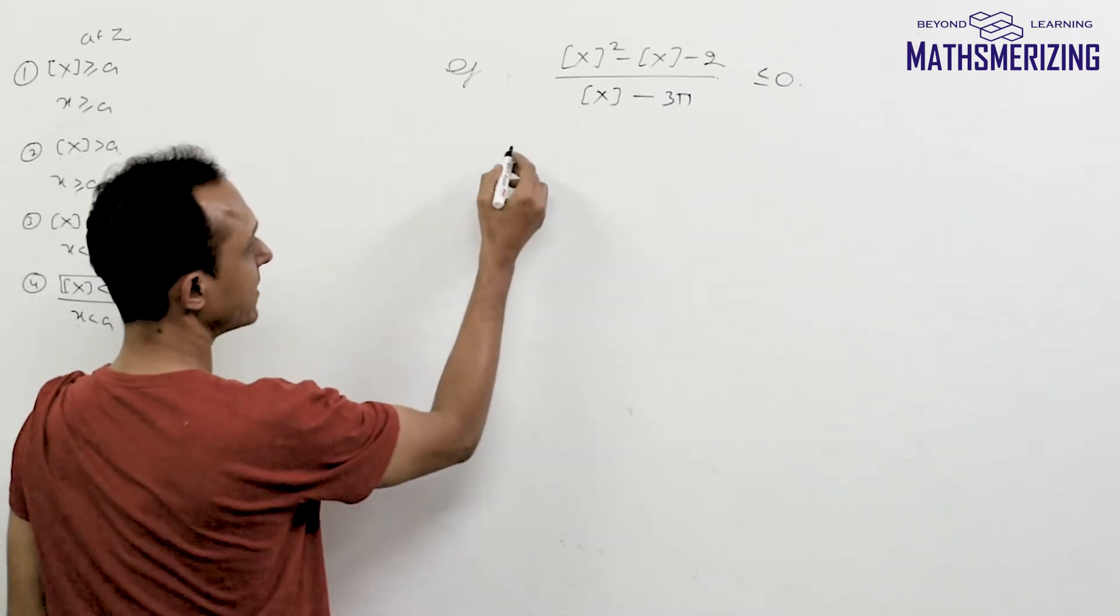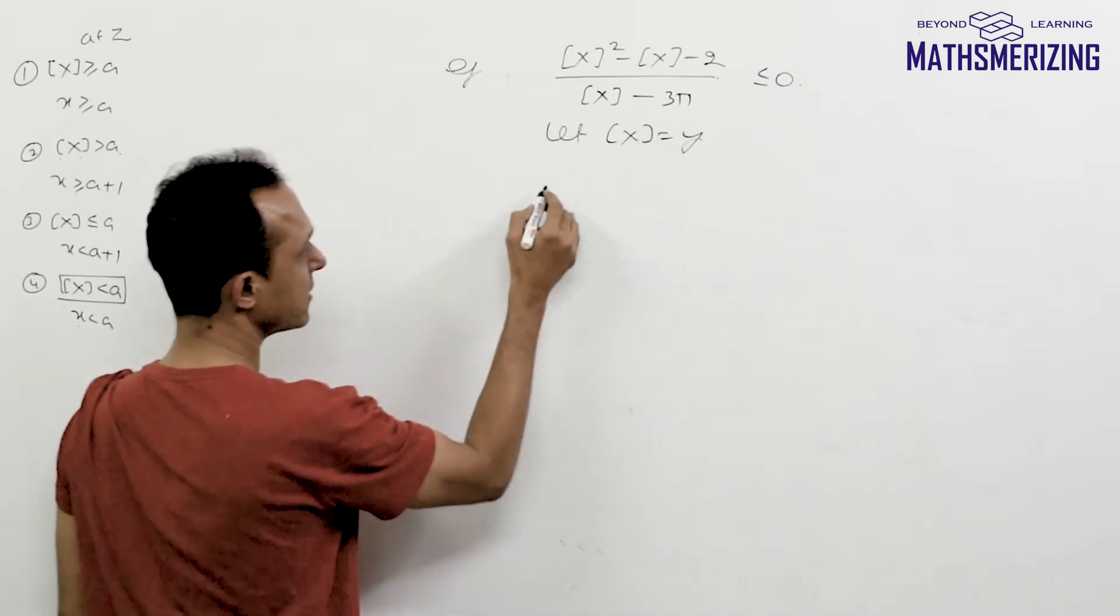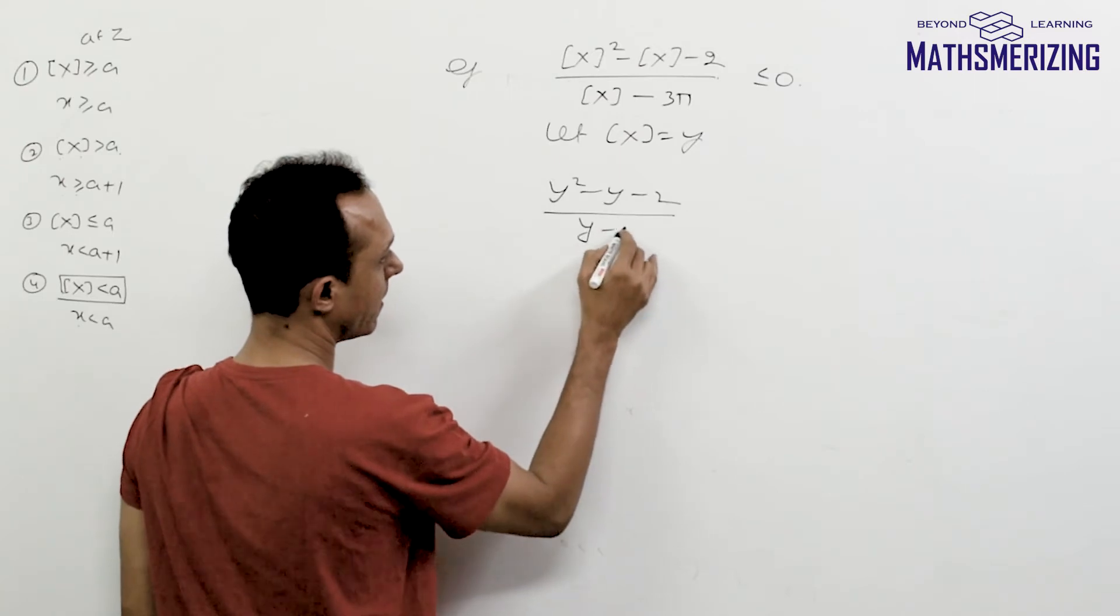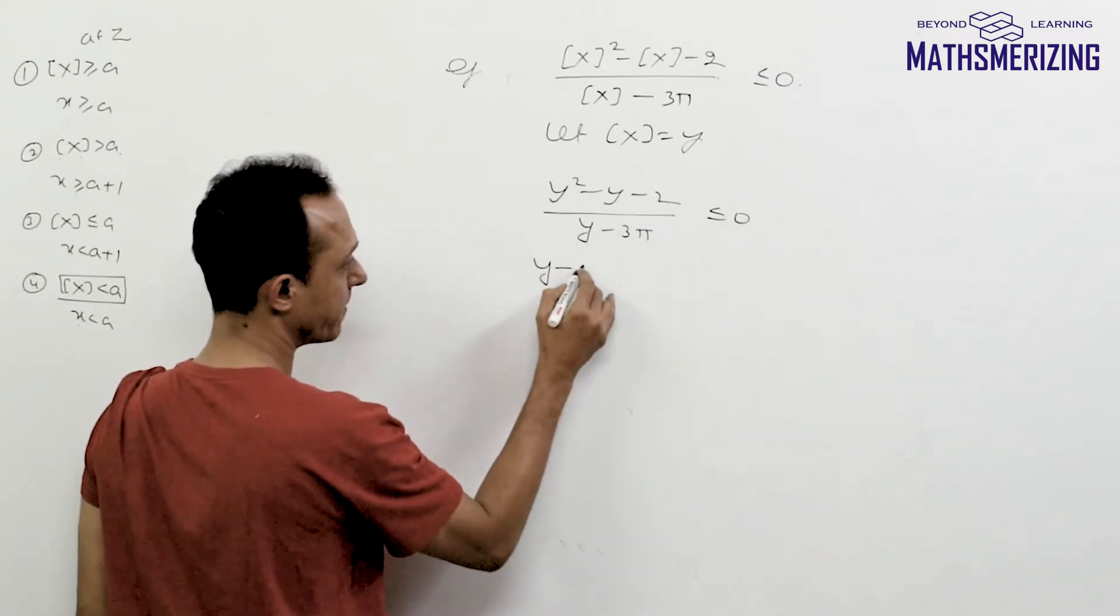Now what I'll do is I can write it as let greatest integer function of x is y. So this is y squared minus y minus 2 upon y minus 3π is less than or equal to 0.